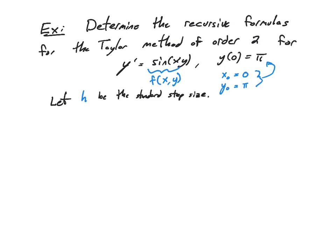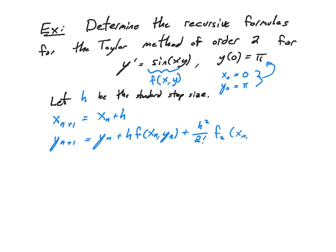So here's our formula. x sub n plus 1 equals x sub n plus h. And y sub n plus 1 equals y sub n plus h times f of x sub n comma y sub n, plus h squared over 2 factorial times f sub 2 of x sub n comma y sub n. Note that this first part — y sub n plus h times f of x sub n comma y sub n — is just Euler's method. The question now is, what is f sub 2 and how do we compute it?